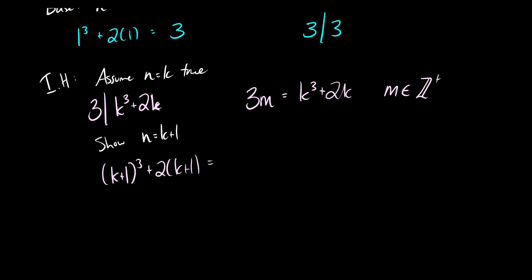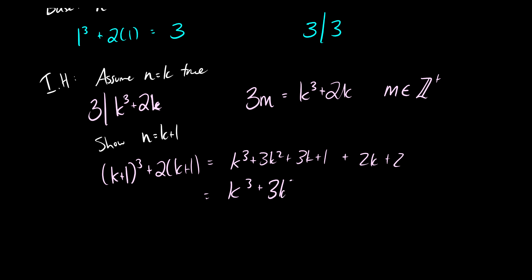Let's expand this. So k plus 1 cubed is going to be k cubed plus 3k squared plus 3k plus 1 — we know that from the binomial theorem. And 2 times k plus 1 is going to be plus 2k plus 2. Let's group our like terms and see if it's divisible by 3. So you have k cubed plus 3k squared plus 5k plus 3. This doesn't look like it's divisible.